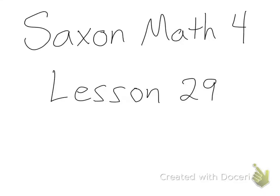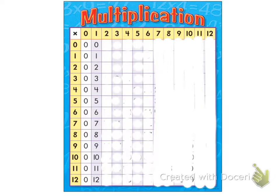Hello everyone. Today's lesson is lesson 29: Identifying and Writing Multiples. We've worked with multiples before — they're the numbers that we say when we count by twos, threes, fours, fives, etc. The numbers we say when we skip count are called multiples.